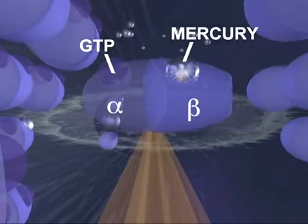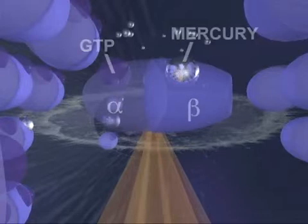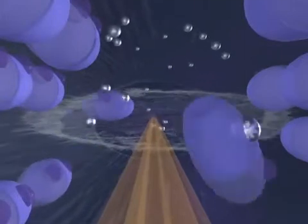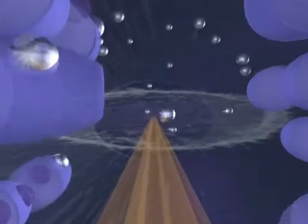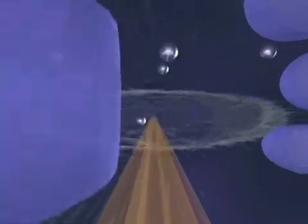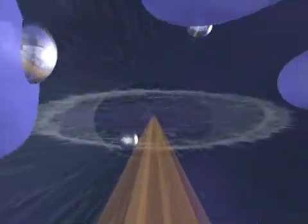Since bound GTP normally provides the energy which allows tubulin molecules to attach to one another, mercury ions bound to these sites prevent tubulin proteins from linking together. Consequently, the neurite's microtubules begin to disassemble into free tubulin molecules, leaving the neurite stripped of its supporting structure.